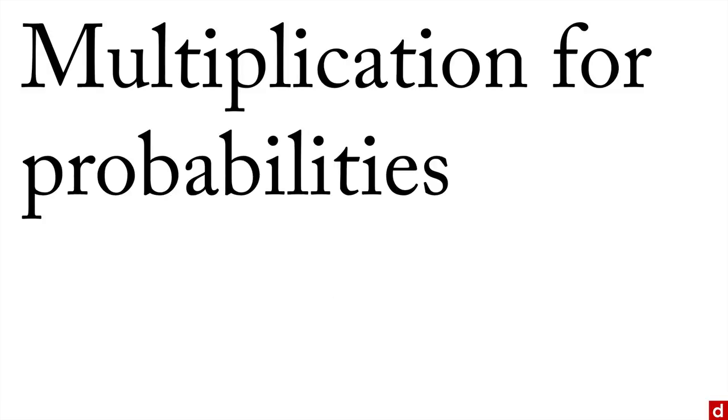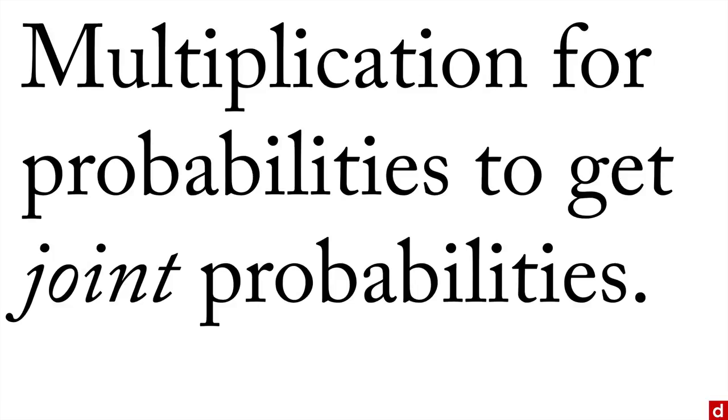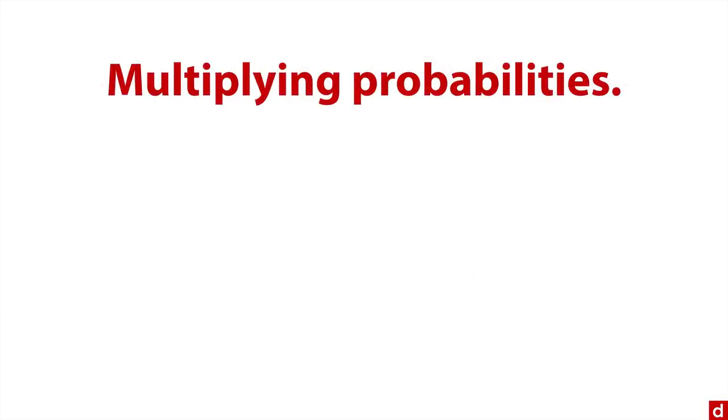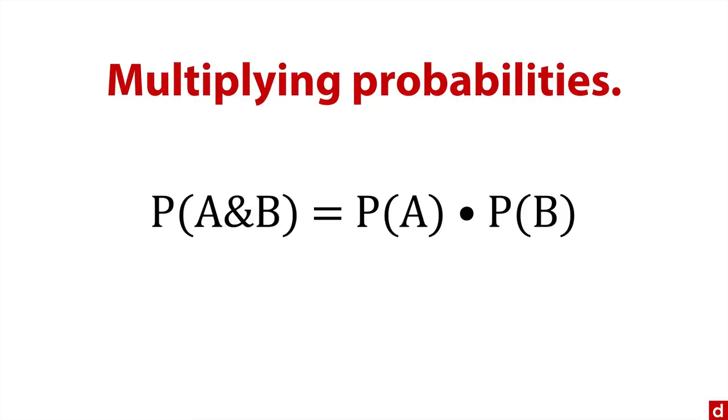Now let's talk about multiplication for probabilities. The idea is to get joint probabilities, or the probability of two things occurring together simultaneously. You need to multiply the probabilities. P(A&B) equals the probability of A times the probability of B.